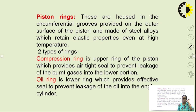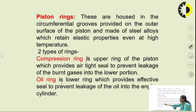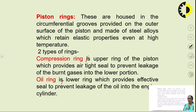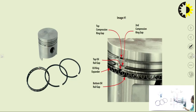Piston rings are housed in circumferential grooves on the outer surface of the piston and are made of steel alloys that retain elastic properties even at high temperatures. Two types of rings exist: compression rings and oil rings. The compression ring is the upper ring providing an airtight seal to prevent leakage of burnt gases into the lower portion, while the oil ring is the lower ring providing a seal to prevent leakage of oil into the engine cylinder.